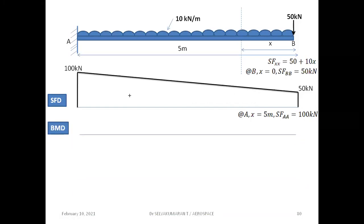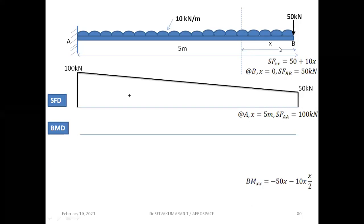For the bending moment diagram, the sign convention is: right side of the section, clockwise is negative, anti-clockwise is positive. BM_xx = −50x − 10x·(x/2). The 50 kilonewton force acts at distance x, and the UDL resultant 10x acts at distance x/2 from the section. At B, x equals zero, so bending moment at B is zero.